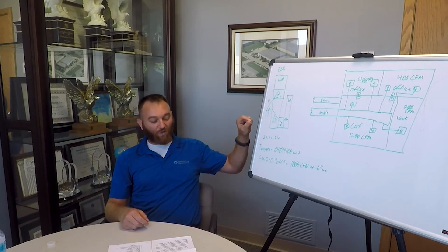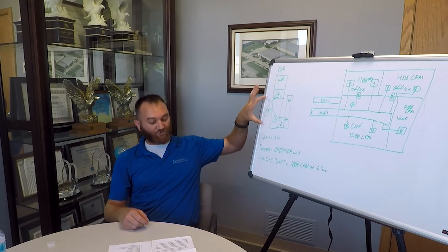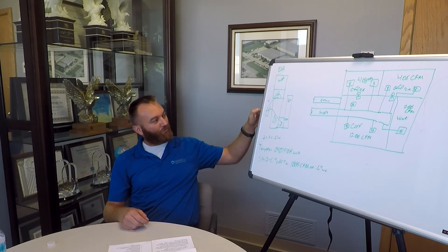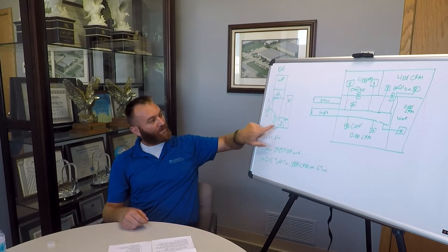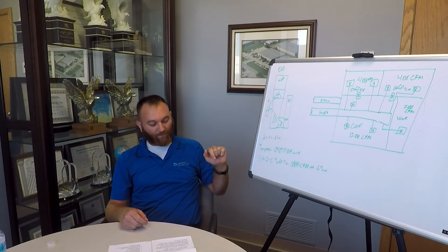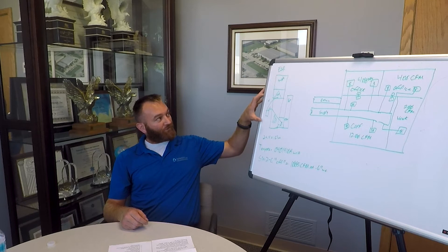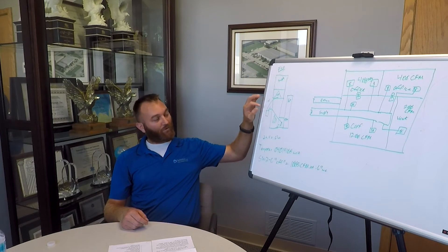Manufacturers will provide you with an external static pressure chart in the book. You will use a magnehelic or a digital manometer to read these negative and positive pressures. External static pressure is the resistance in the ductwork that the blower must overcome to move air properly.